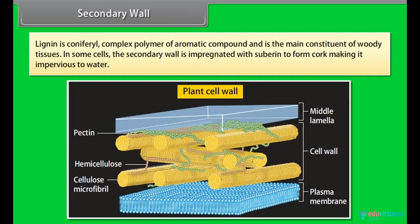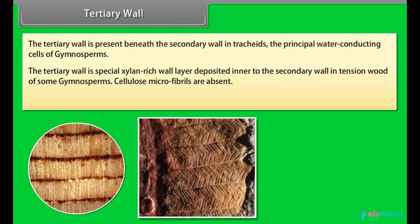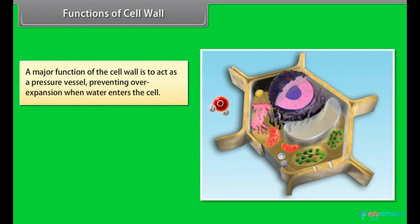Tertiary wall: The tertiary wall is present beneath the secondary wall in tracheids, the principal water conducting cells of gymnosperms. The tertiary wall is special xylem-rich wall layer deposited inner to the secondary wall in tension wood of some gymnosperms. Cellulose microfibrils are absent. Tertiary wall is distinguishable both chemically as well as through staining.